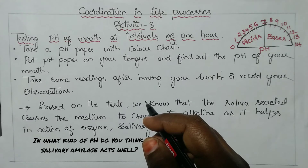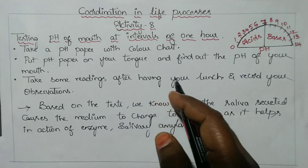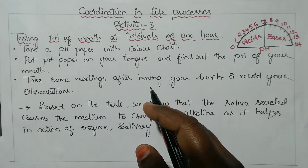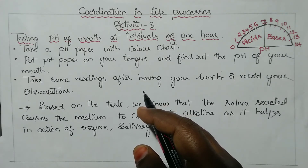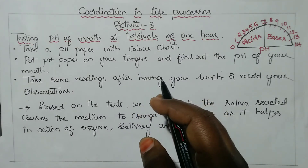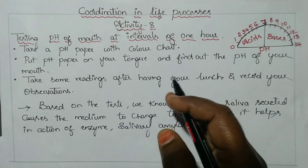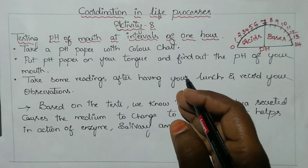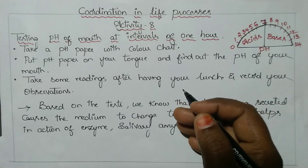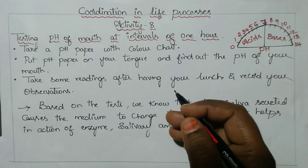In what kind of pH do you think saliva acts well? Salivary amylase enzyme is present in saliva, and that amylase enzyme acts in an alkaline pH medium. In the stomach, only proteins are digested — carbohydrates are not digested there. This is because salivary amylase acts on carbohydrates only in an alkaline medium, but in the stomach the medium is acidic due to the presence of hydrochloric acid. Salivary amylase will digest carbohydrates into maltose and dextrose in an alkaline medium.